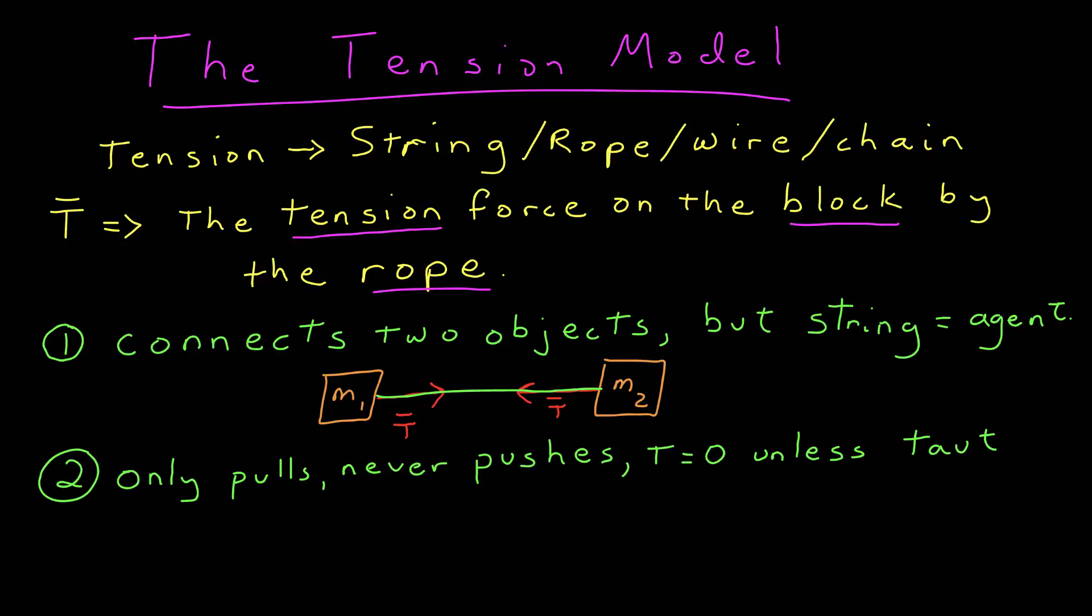The tension only pulls. It never pushes. And the magnitude is 0 unless the string is taut. So here I've drawn the tension on mass 1 away from mass 1 because the string is pulling on it.